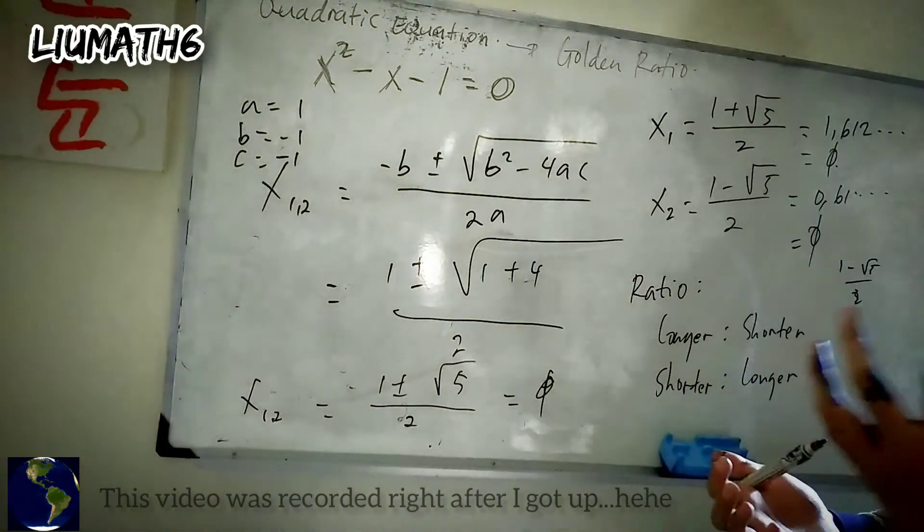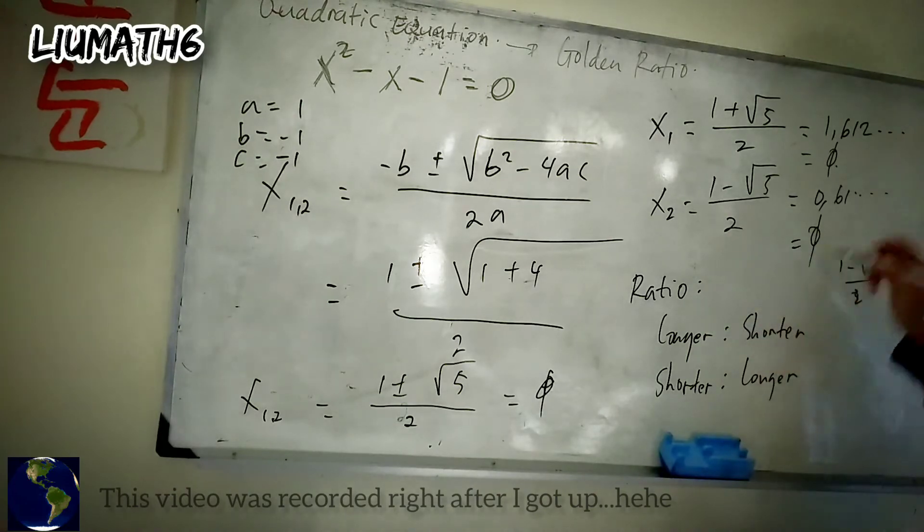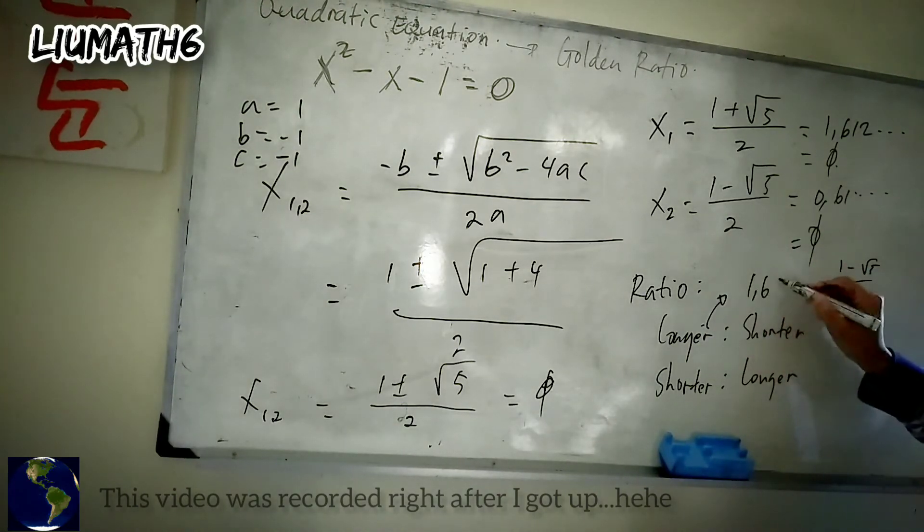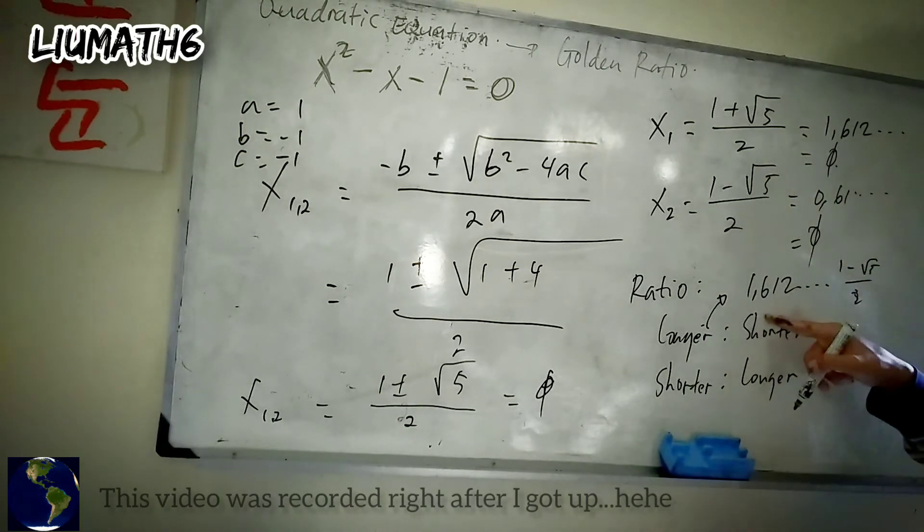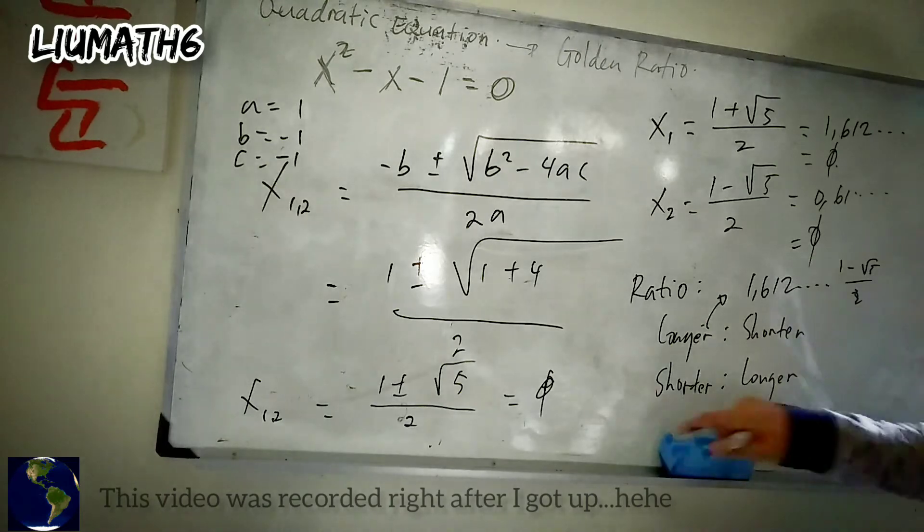The order is just different, right? So for the longer and shorter, we take the value for this as 1.612... like this, which is the golden ratio for longer to the shorter.